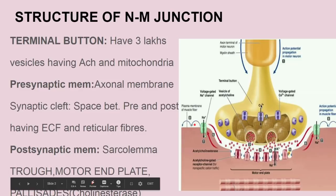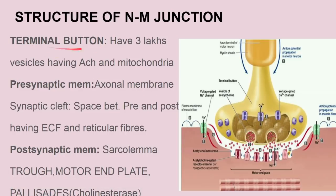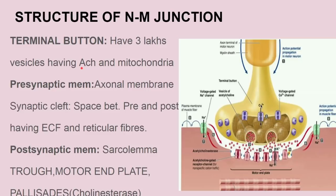Now the characteristics of the structure of the NM junction are: first of all the terminal button or the end feed. The axon of the neuron supplying a skeletal muscle loses its myelin sheath at its terminal, and it divides into many synaptic knobs or terminal buttons or end feed. These synaptic knobs or terminal buttons actually have around three leg vesicles which contain acetylcholine and the mitochondria. The acetylcholine in the terminal button is actually formed by the mitochondria.